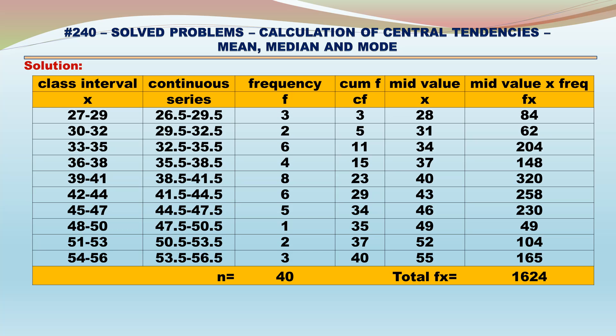Let us calculate mid-value multiplied by frequency (fx): 3×28=84, 2×31=62, 6×34=204, 4×37=148, 8×40=320, 6×43=258, 5×46=230, 1×49=49, 2×52=104, 3×55=165. Total Σfx = 1,624. Mean = Σfx ÷ n = 1,624 ÷ 40 = 40.6. That is the mean answer.